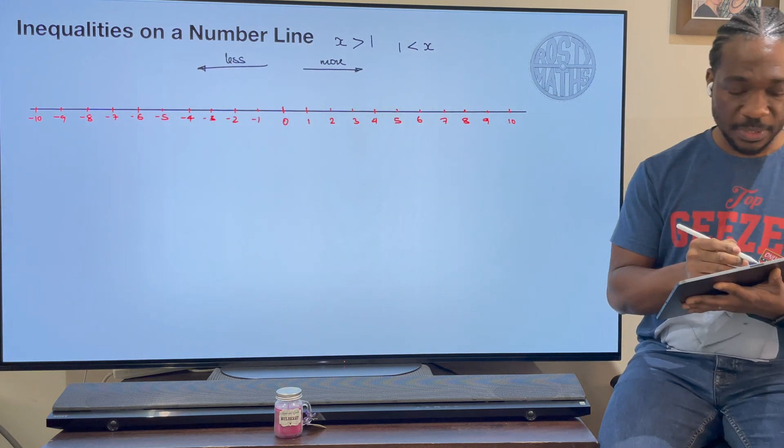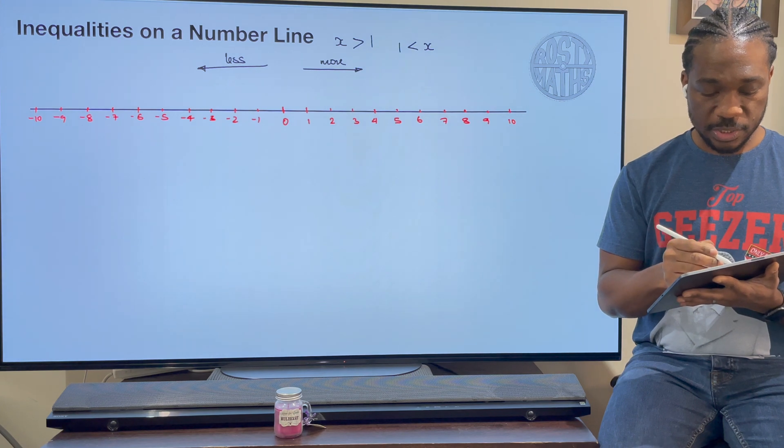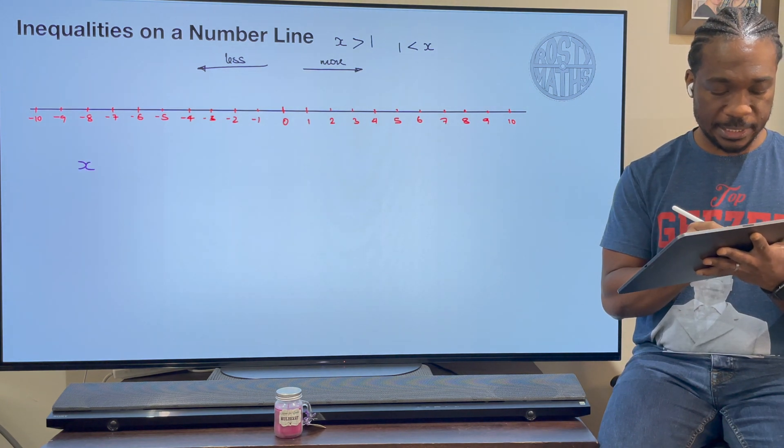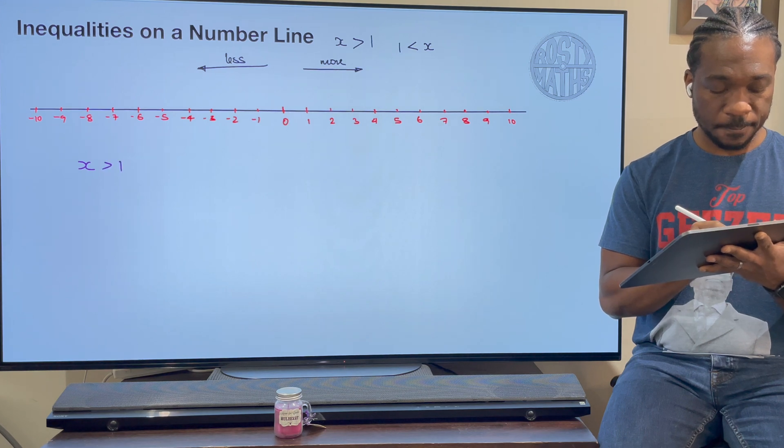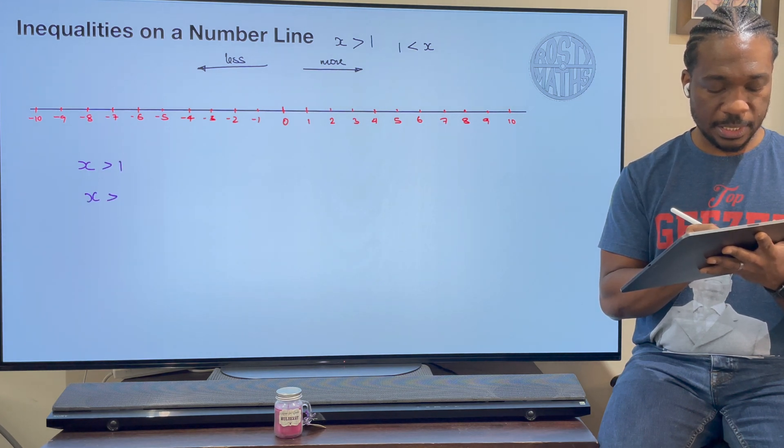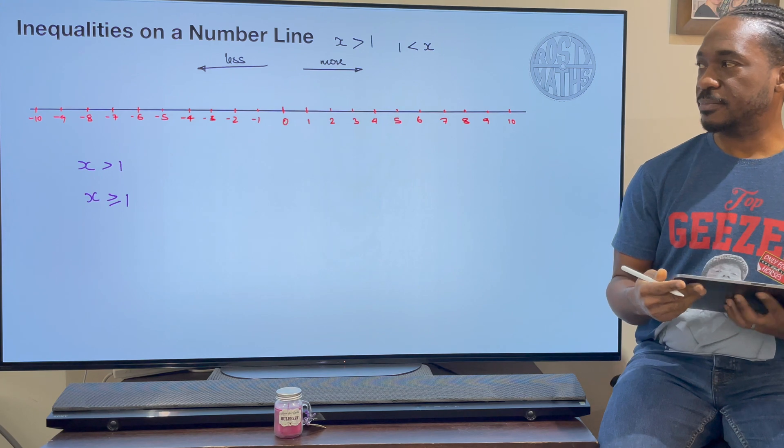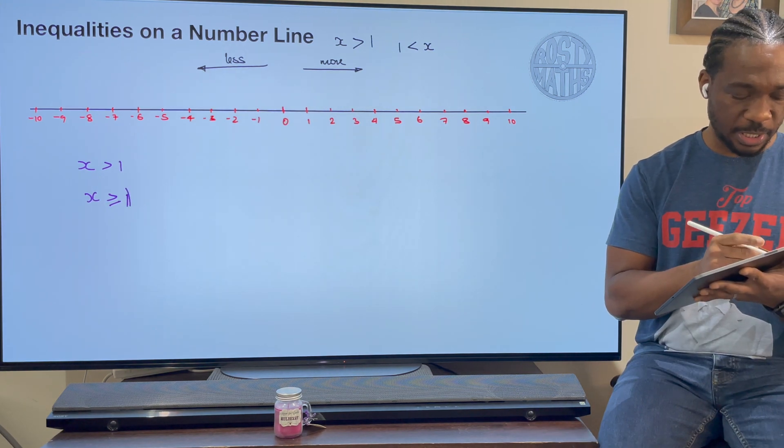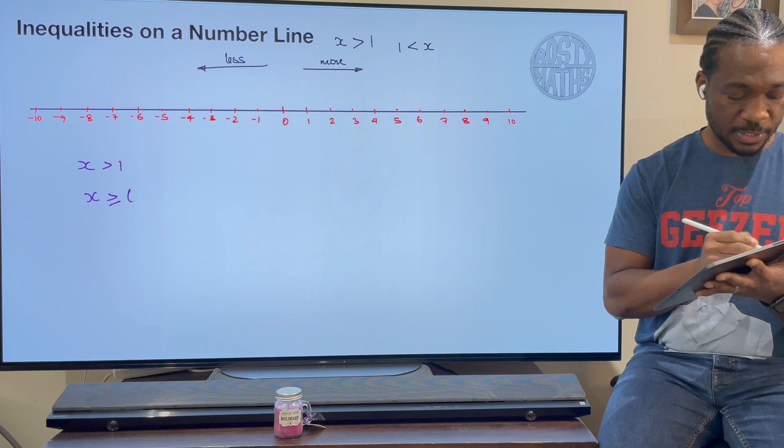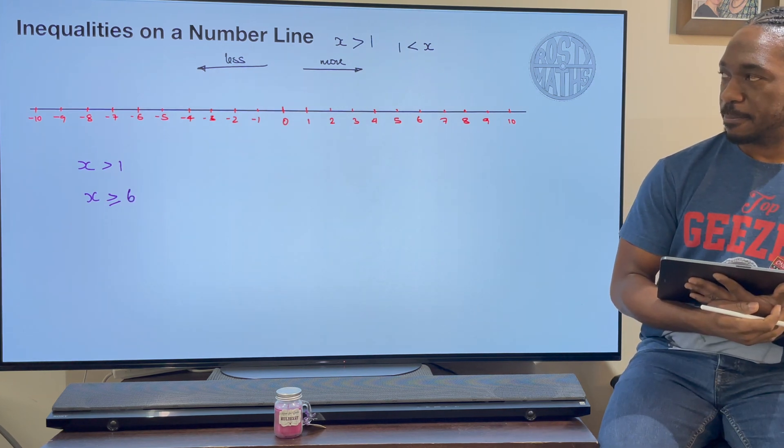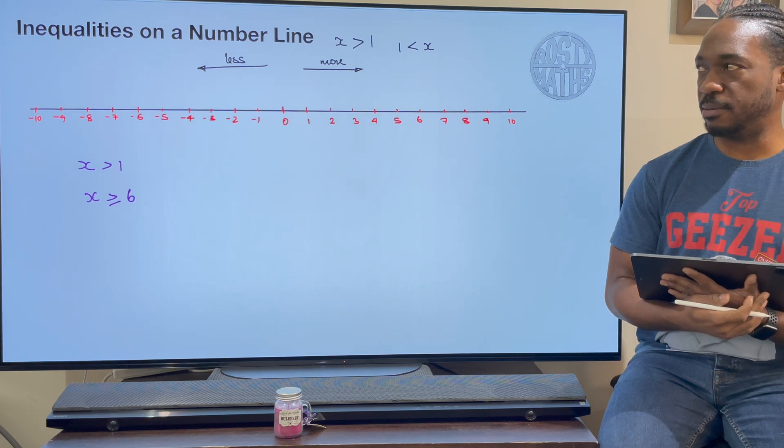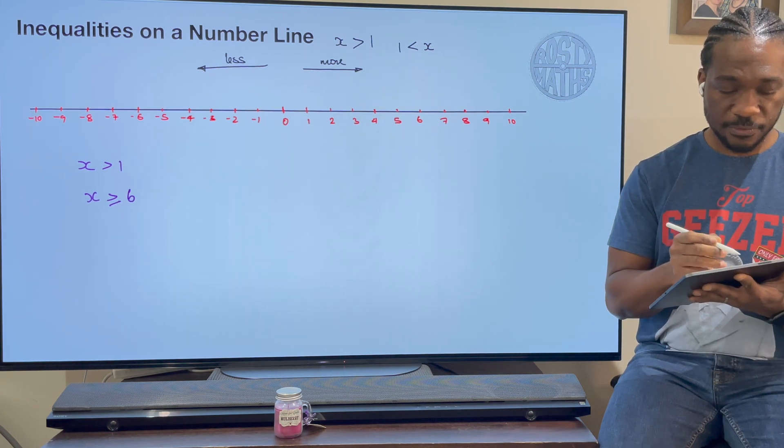So I'm going to start off first of all with some simple questions. I'm going to start with x is greater than 1. X is greater than or equal to 1. Let's actually change it because they'll run into each other. So let's go for 6 there. All right, x is greater than 1.